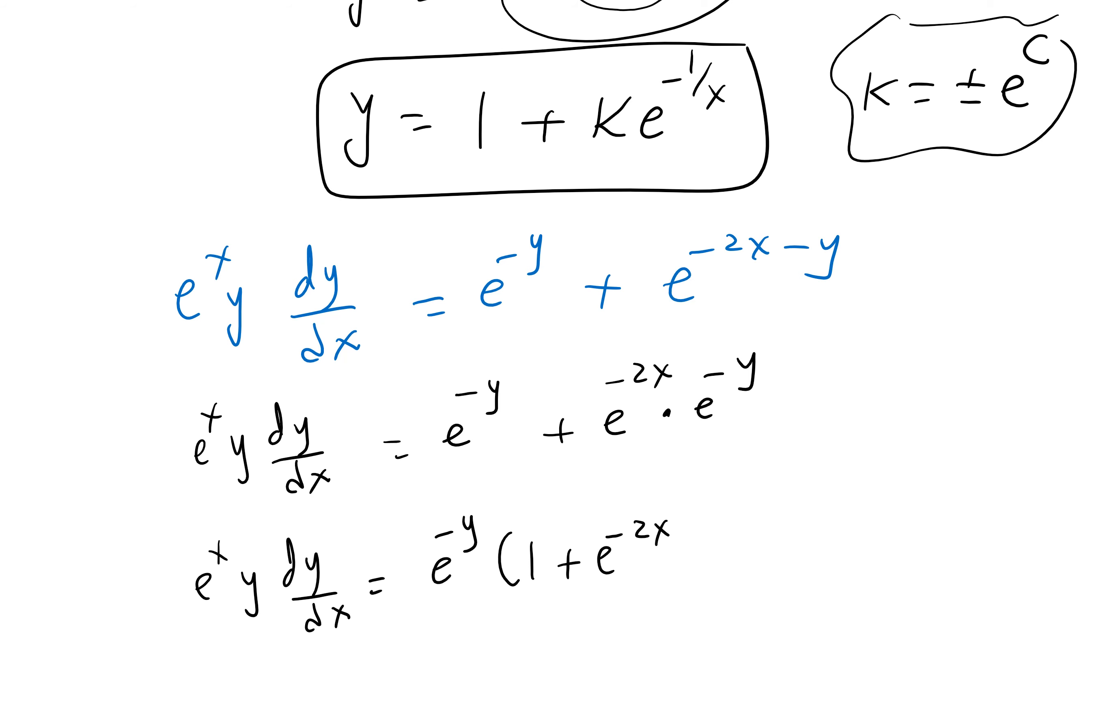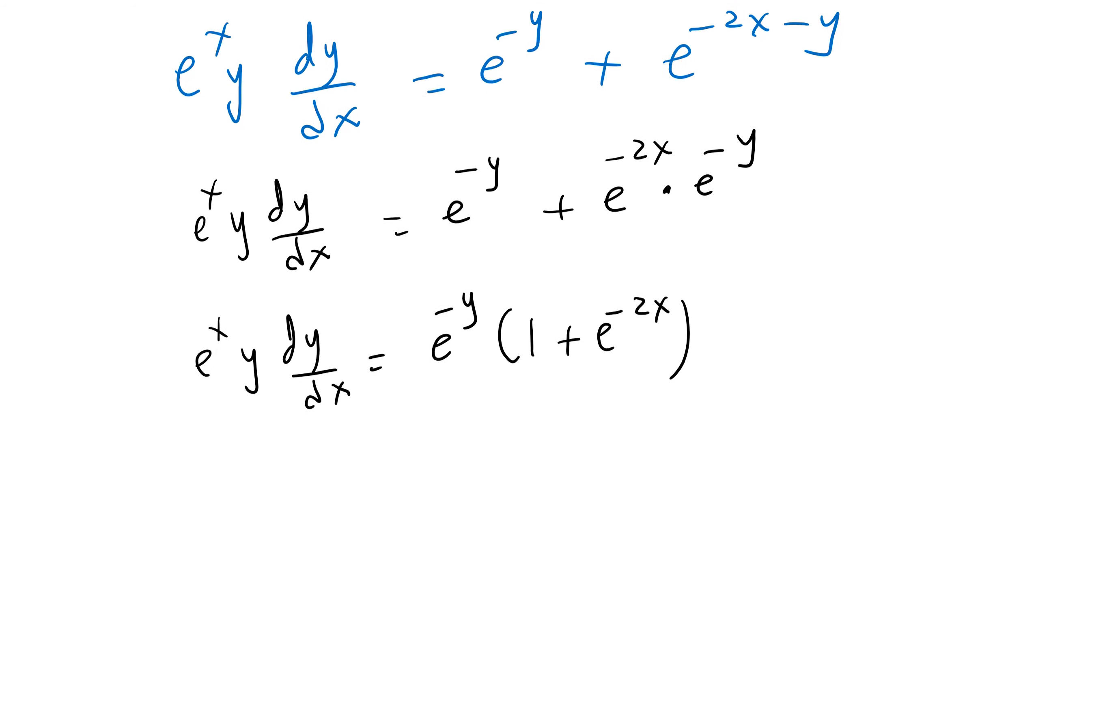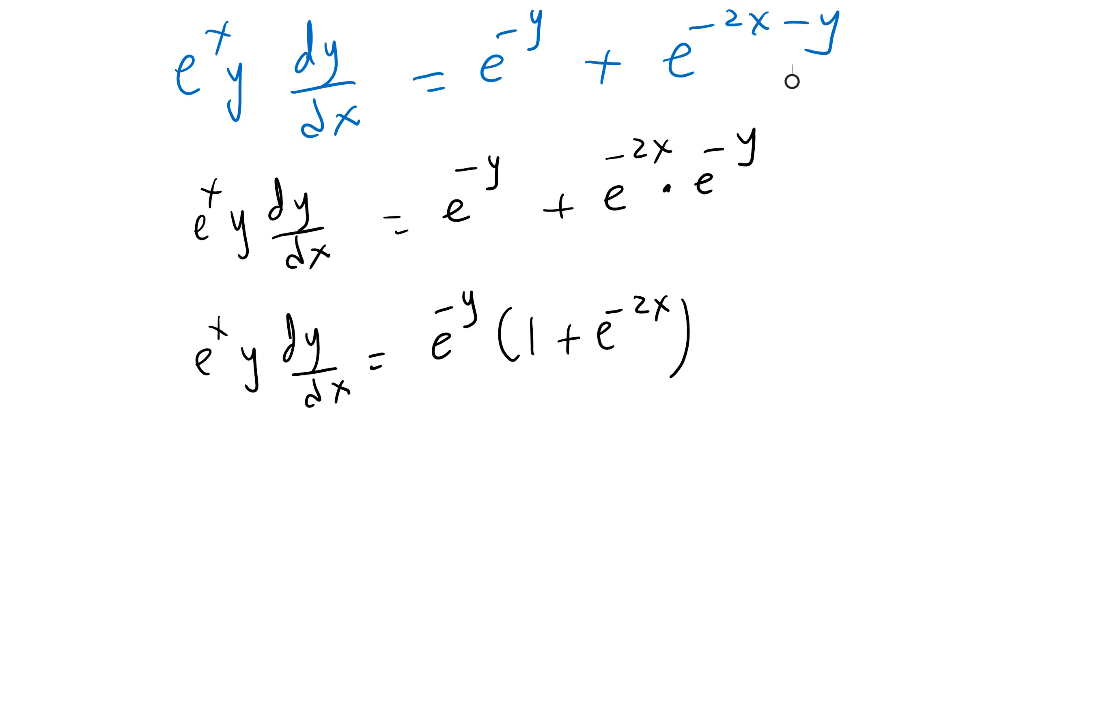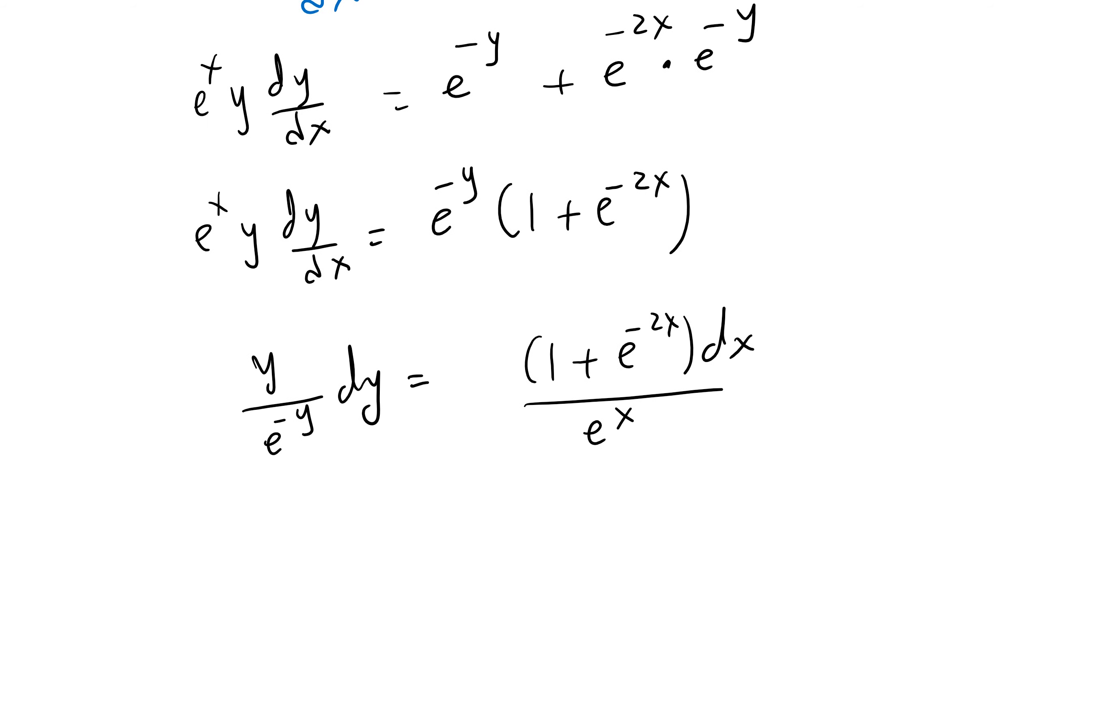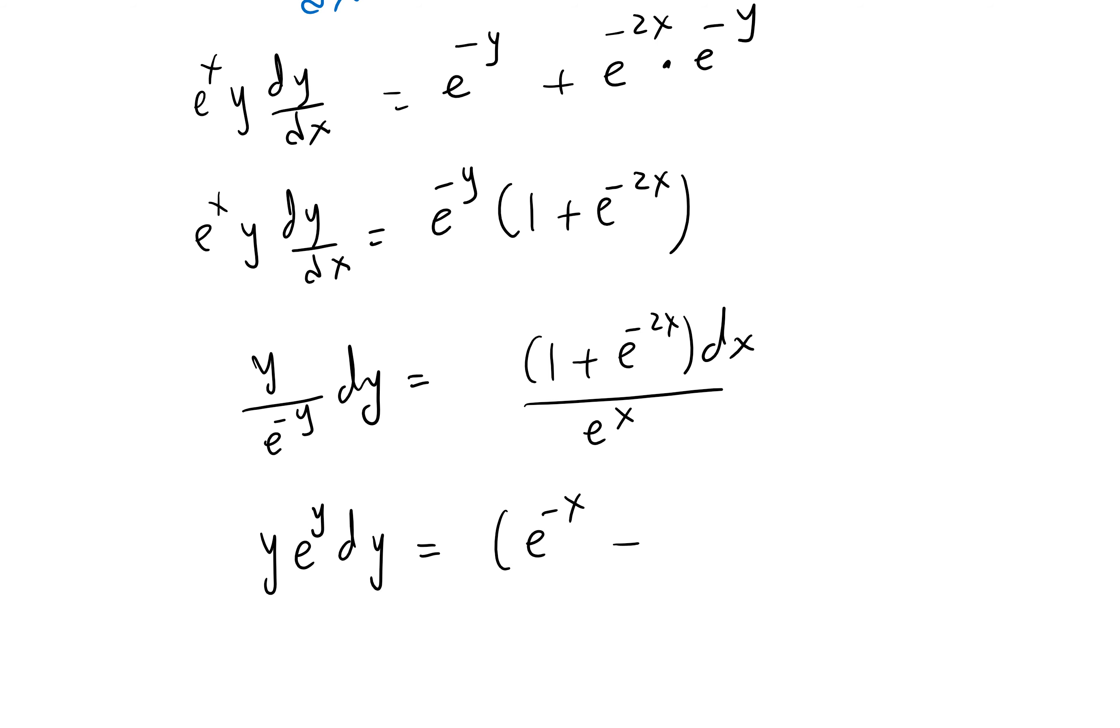Why did we do it this way? Because now we can factor e^(-y), that would give 1 plus e^(-2x). Then I'll try to separate the y's, bring that e^(-y) down here dy, bring the dx up there, and e^x down. Then what we can do, we can rewrite this by bringing this up. Here you can probably split it up, e^(-x), e^(-3x), and then integrate both sides.